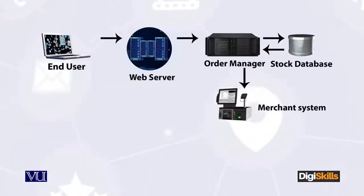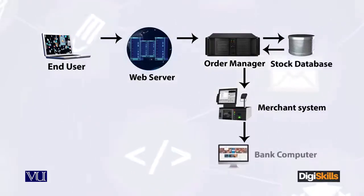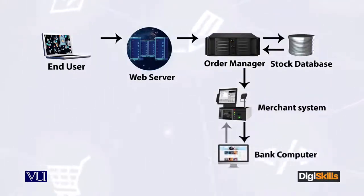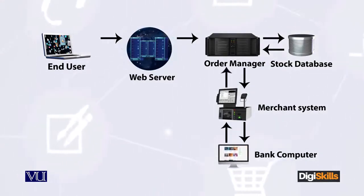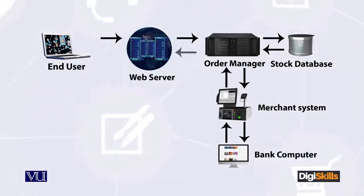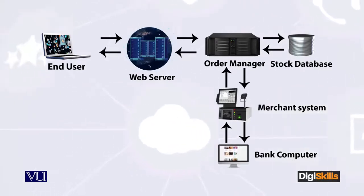Whatever payment I have to make — via credit card, PayPal, or whatever mechanism — I will connect with the bank. The bank verifies all the details. After that, my payment is cleared and the order number is generated.